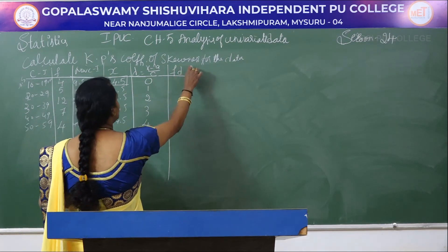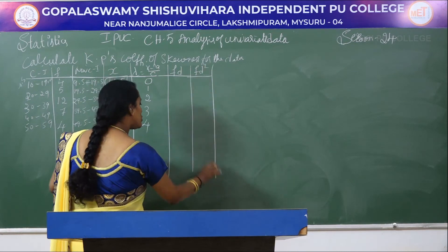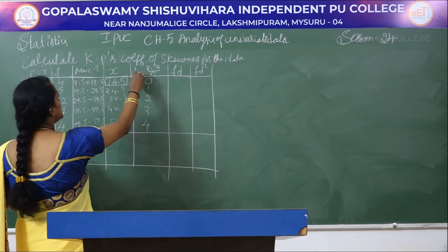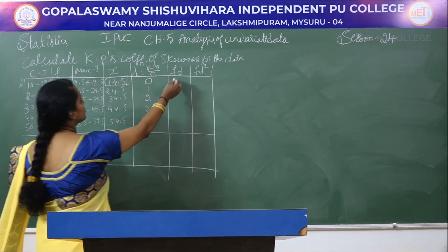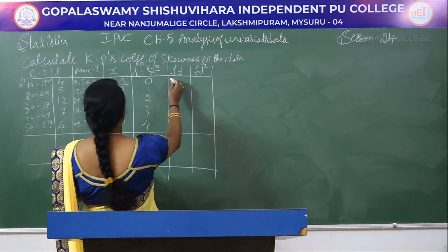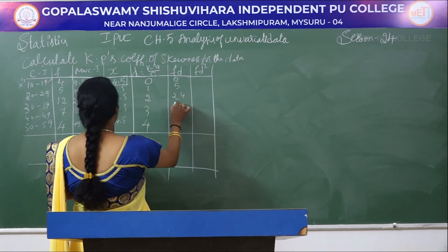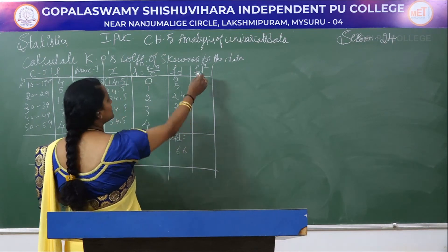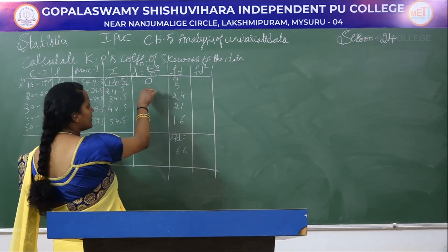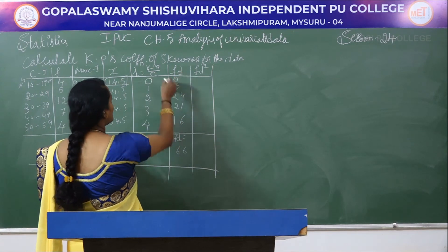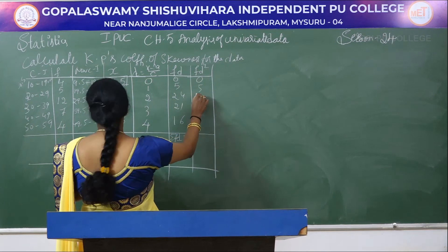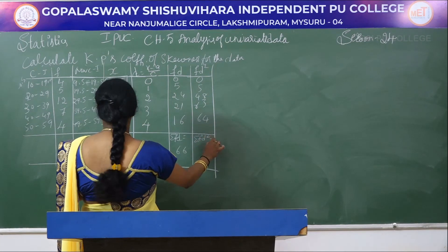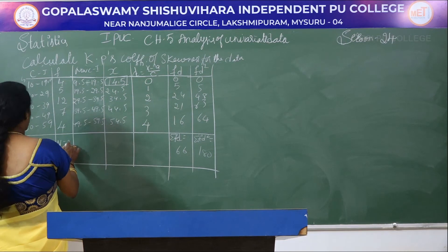Next, find fd and fd². The fd values (f × d) are: 0, 5, 24, 21, 16; summation of fd = 66. For fd², take the product of the fd column and the d column: 0, 5, 48, 63, 64; summation of fd² = 180, and n = 32.